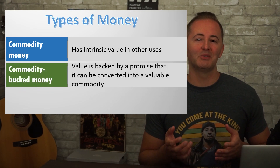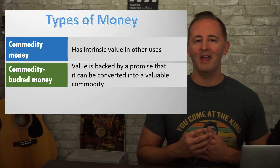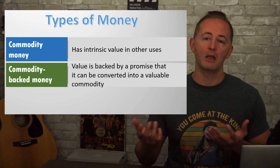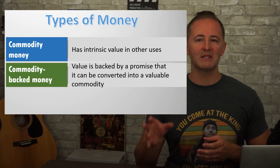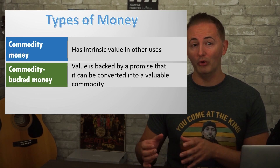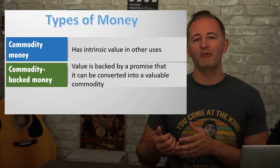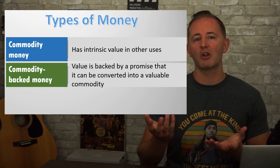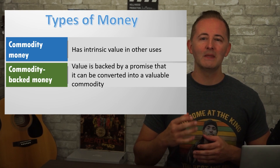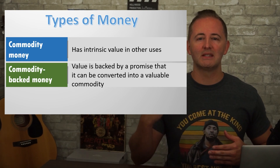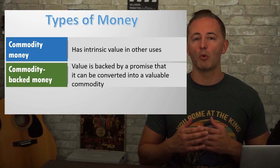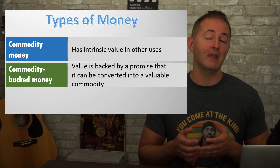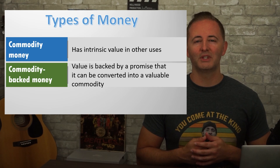Commodity-backed money is what happens when commodity money levels up, and is usually a paper form of money that represents a certain amount of a commodity like gold or silver. Now instead of actually having to bring gold to buy something, you can buy stuff with a piece of paper that says it can be redeemed for a specific amount of gold or whatever commodity it represents. This is obviously a lot more convenient, and again facilitates trade since the money is more portable, and people have confidence in it because they know that they can trade it for the commodity if they ever want to.